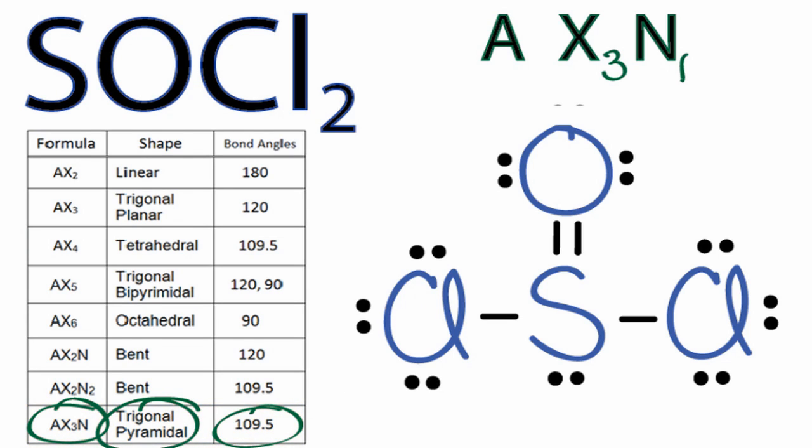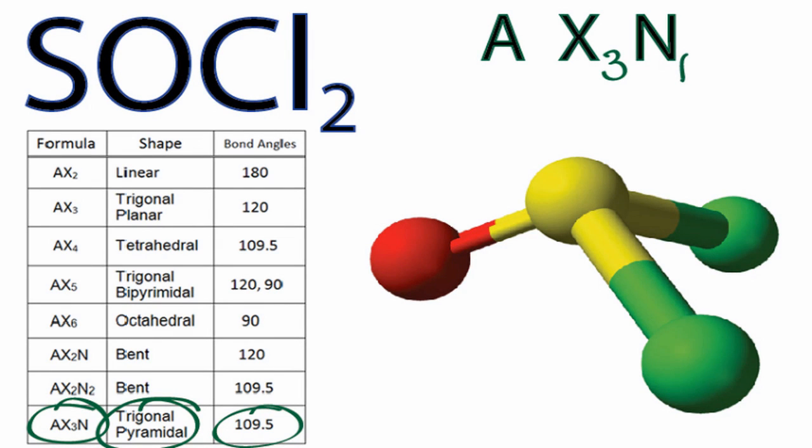Let's see what that looks like in three dimensions. So here we have the SOCl2 molecule, the sulfur, that's in the center. Then we have the oxygen here, and then these are the chlorine atoms. And don't forget that pair of unbonded electrons that was on top of the sulfur.